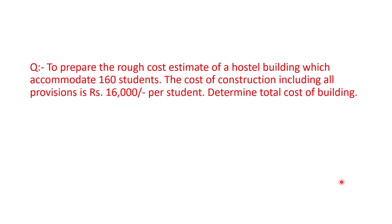Similarly, let's take another example. Prepare the rough cost estimate of a building to accommodate 160 students. Here 160 students is our unit, which means we have 160 units. The cost of construction including all provisions is 16,000 per student. Determine the total cost of the building.